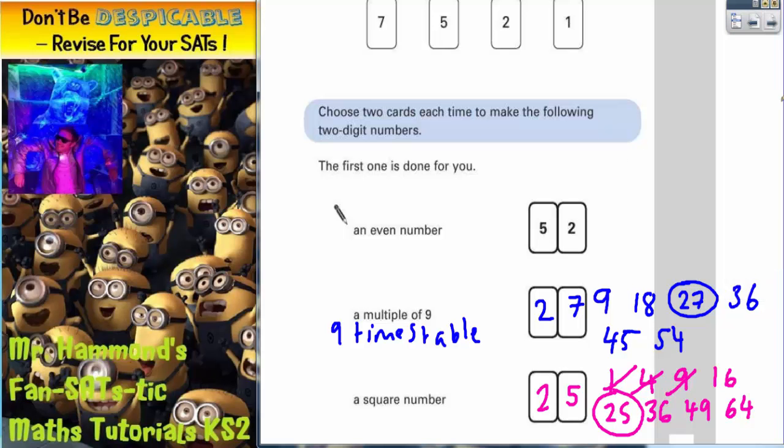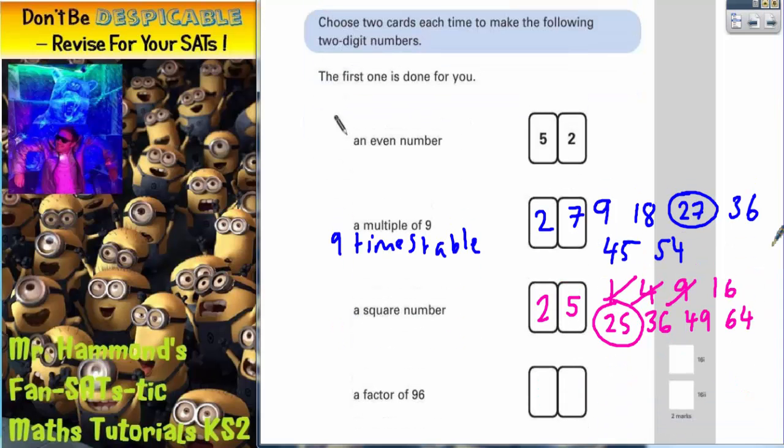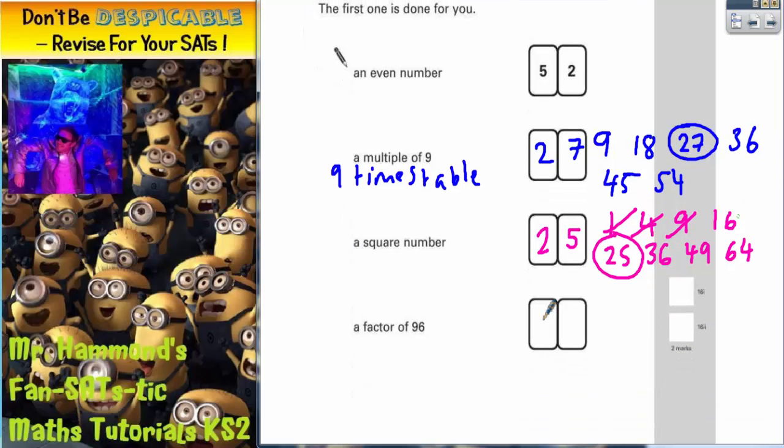For the final part of the question we've got factors of 96. Now again it might help to try and work out what factors of 96 are and see what we can make from that. So remember factors of 96 are pairs of numbers that multiply together to make 96.